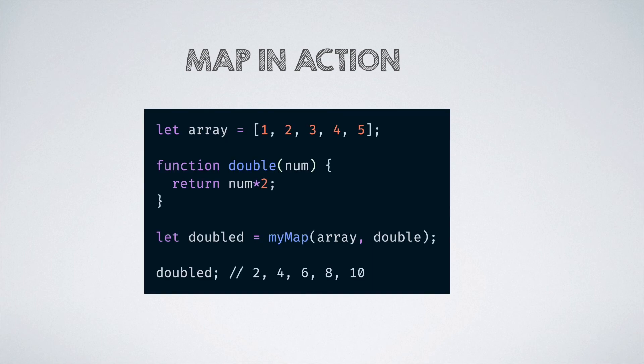To test out our custom map function, we can create a new array, declare a function called double, and then execute the map like so. We will be able to see that the doubled array would contain the double value of each of the numbers.